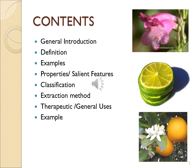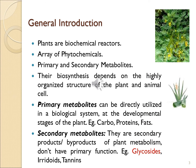Plants are biochemical reactors that produce an array of phytochemicals. These phytochemicals can be simply classified as primary and secondary metabolites. The biochemical reactions can be simply oxidation, reduction, and hydrolysis, which are just a part of photosynthetic reactions. These biosyntheses depend on highly organized structures of plant and animal cells.